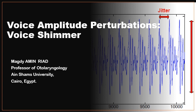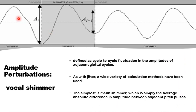Assalamu alaikum. This presentation is on the voice shimmer — the small, short-term and random fluctuations in the amplitude of consecutive glottal cycles. The amplitude of consecutive glottal cycles are not always entirely symmetrical; sometimes there would be small changes in the amplitude between these consecutive cycles, and if these changes exceed a certain threshold, they become an indication of voice pathology.